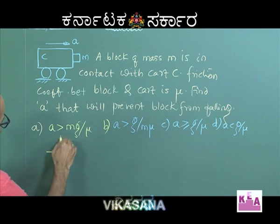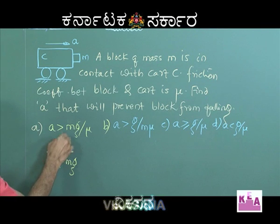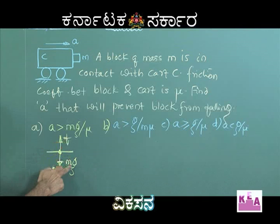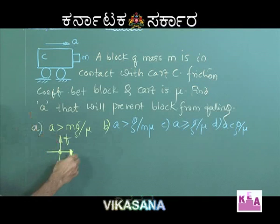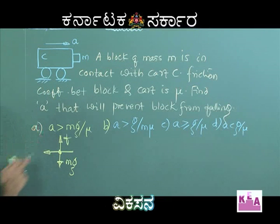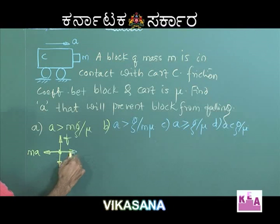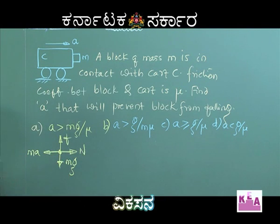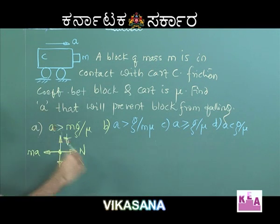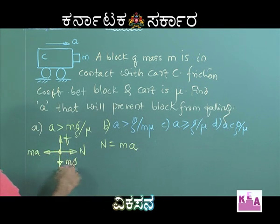This is the block; its weight is acting vertically downwards. The frictional force should be acting vertically upwards to prevent the block from falling due to its weight. The cart is moving to the right, so the pseudo force direction is towards the left, with magnitude MA — mass of the body multiplied by acceleration of the frame of reference. This is also the normal reaction of the cart on the block. For the block to be at rest with respect to the cart, all forces must be balanced, so N equals MA and friction equals the weight.